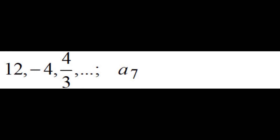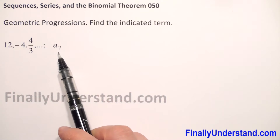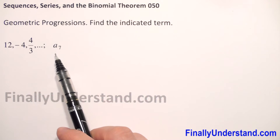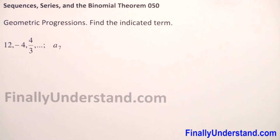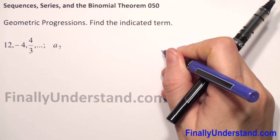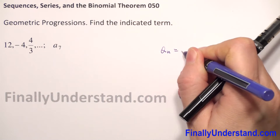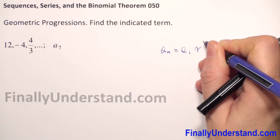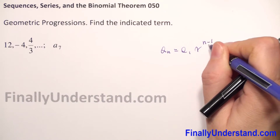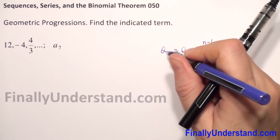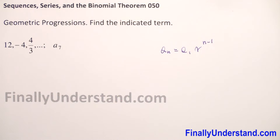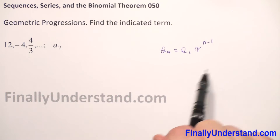We have a given geometric progression and we have to find the 7th term. To find the 7th term of a geometric progression we will use the formula for the nth term: a_n is equal to a1 times r to the power n minus 1. The power is always 1 less than the number of the term. So this is our formula.